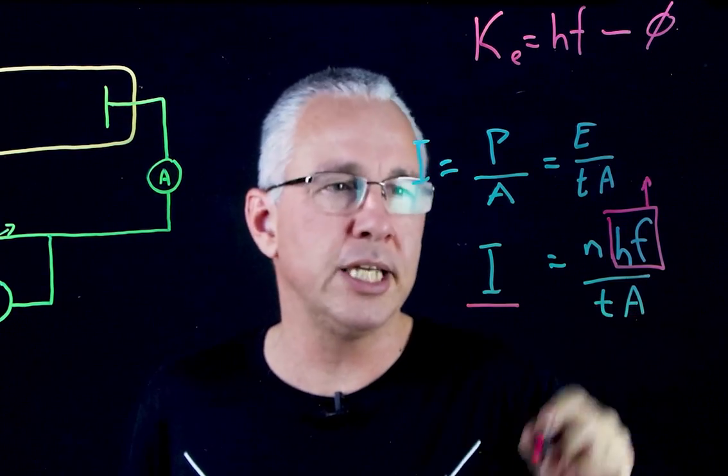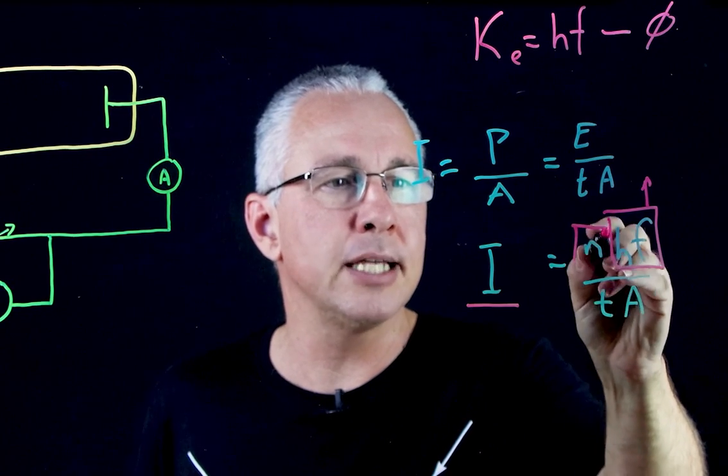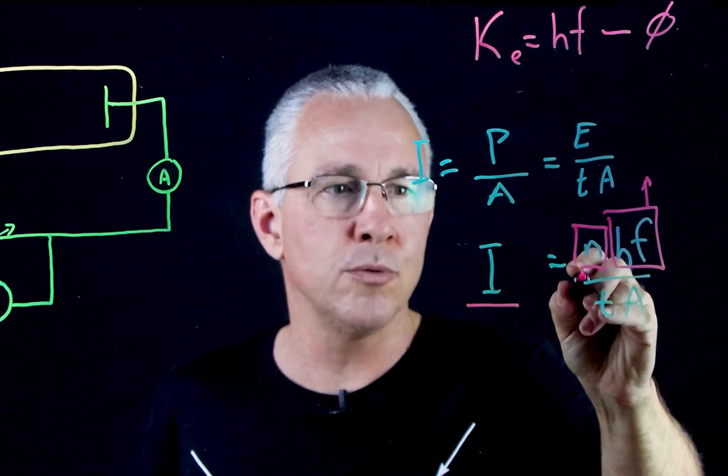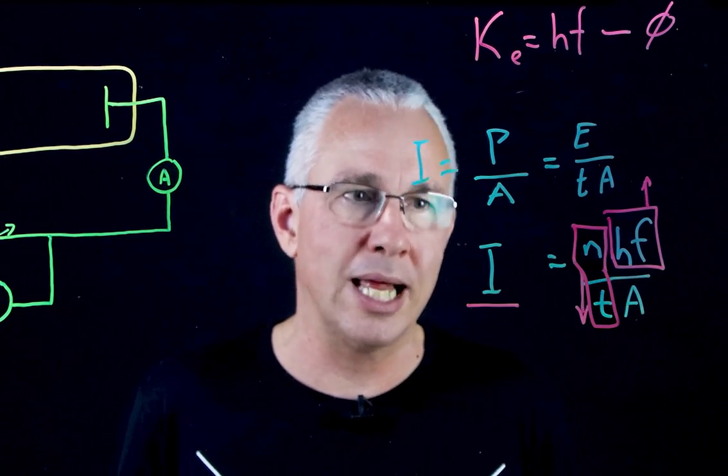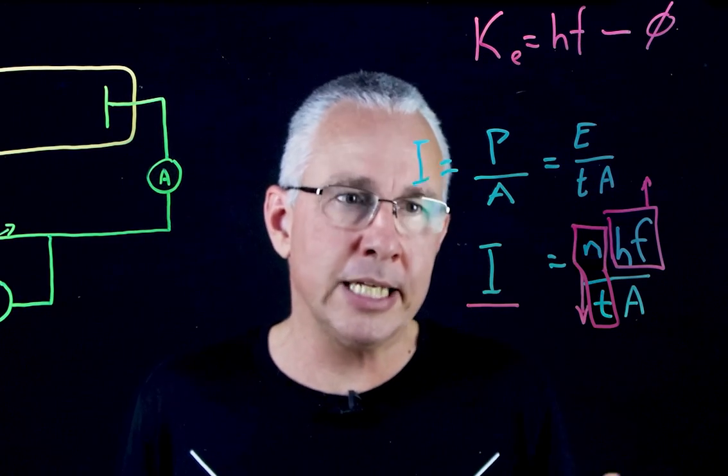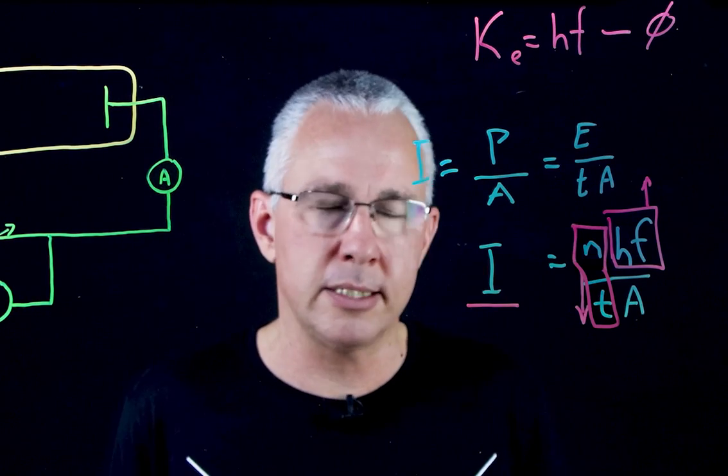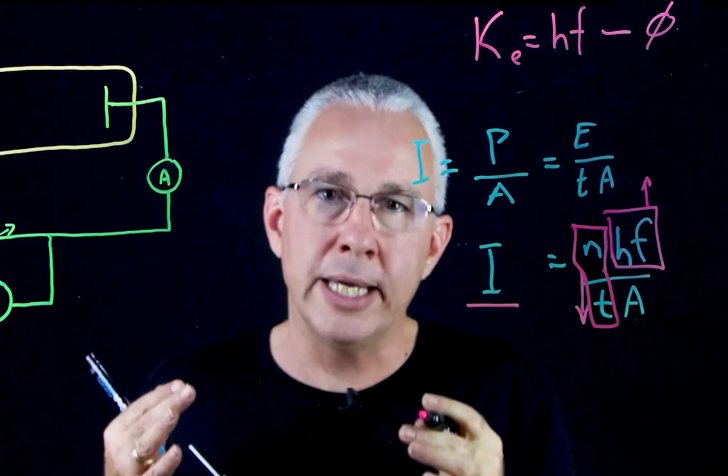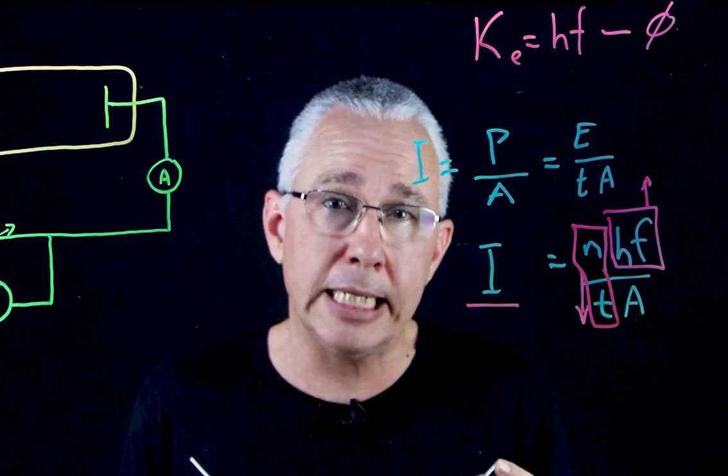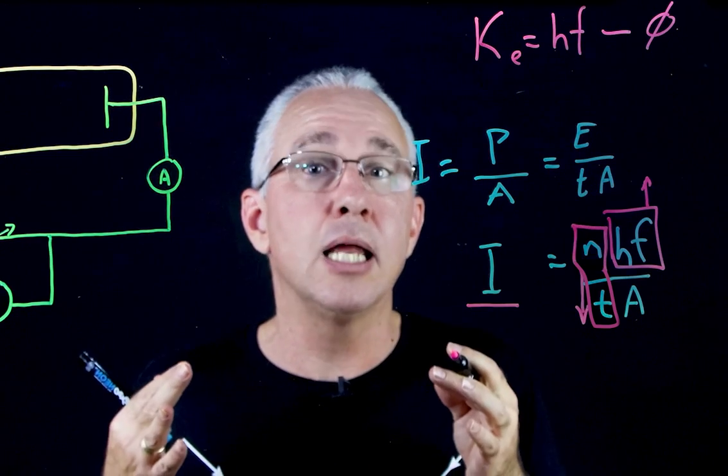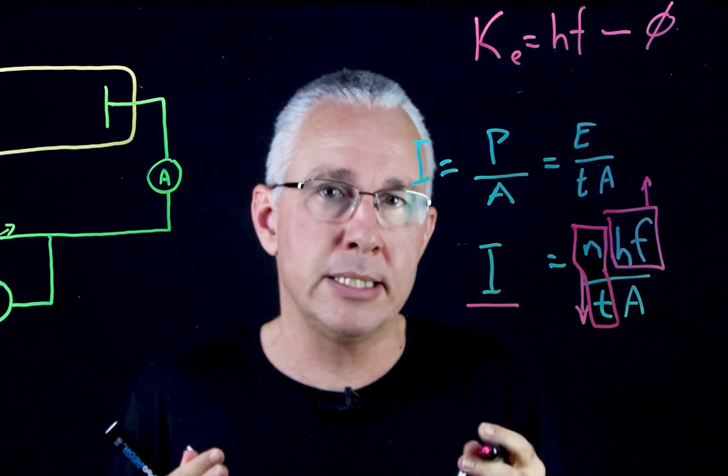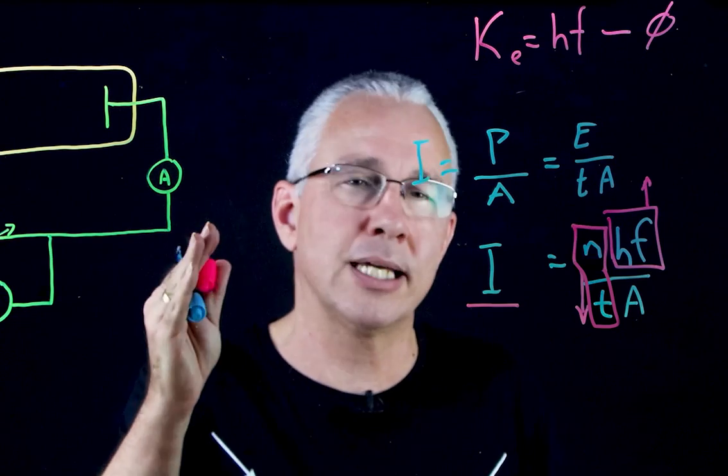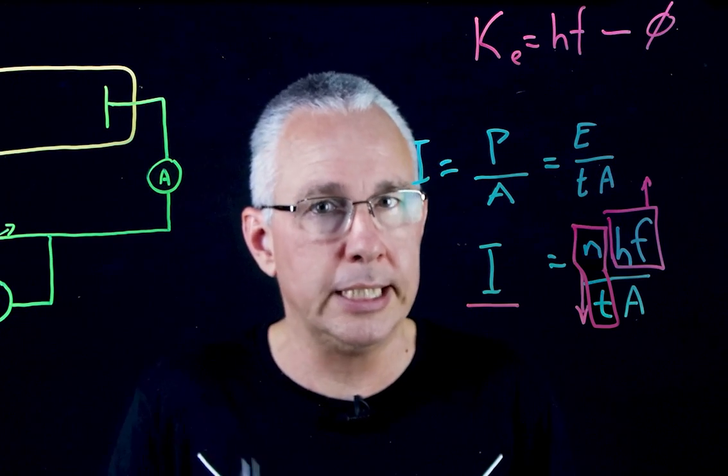So can you see what's happening? We're not changing the time, we're not changing the area. It means that my number of photons, or the rate that I will have, is going to decrease in order to keep the intensity the same. So the answer is, by increasing the frequency and maintaining the intensity, we get fewer photoelectrons emitted per second. In other words, the current is going to decrease.